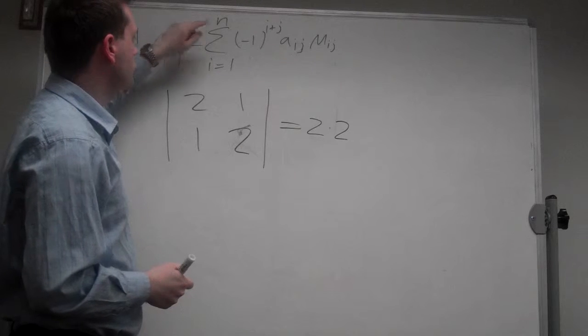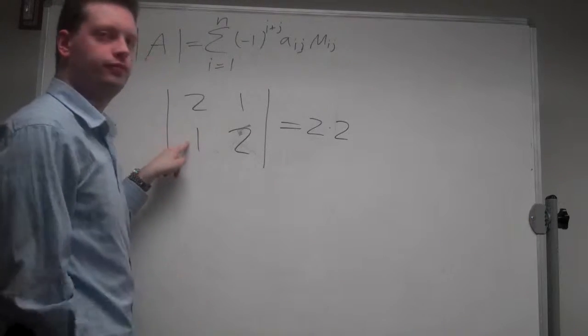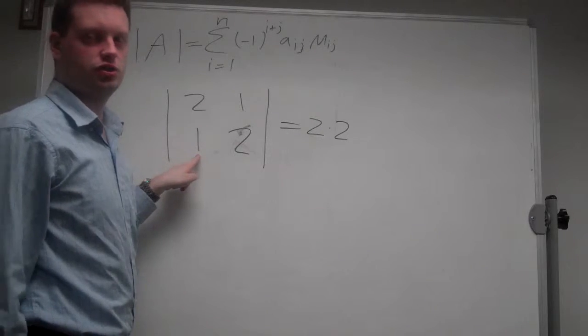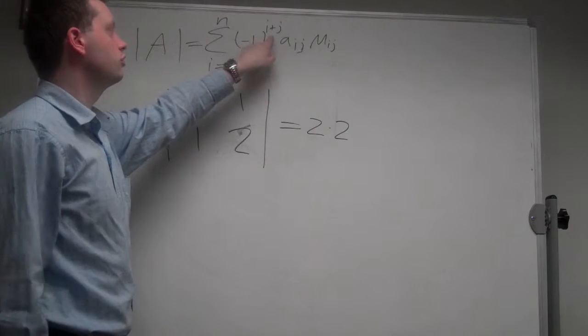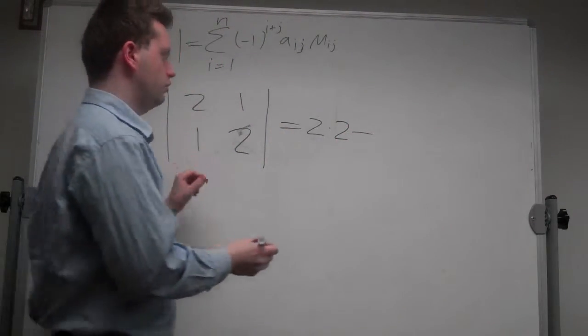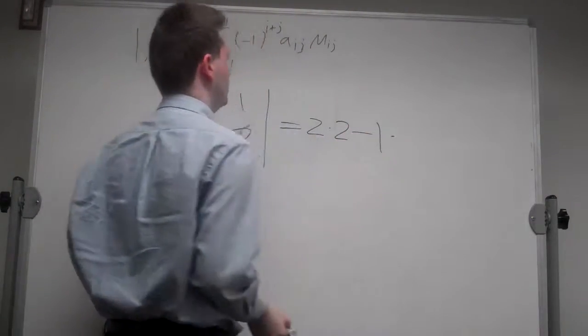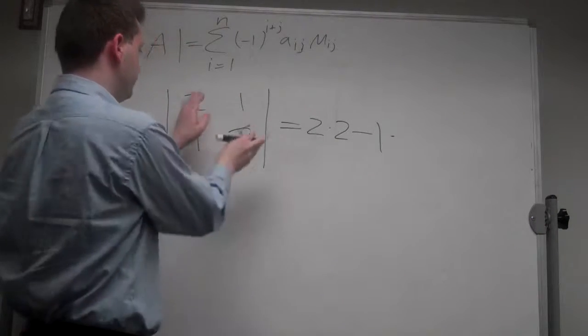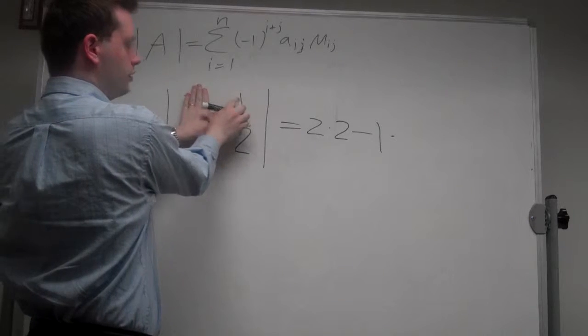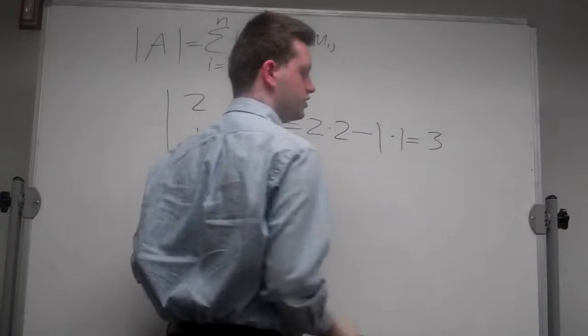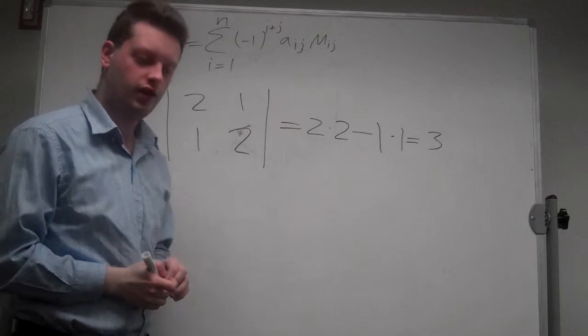Now the second one, we increase the row to number 2. We go to this element, which has indices 2 and 1, so they sum to 3, giving us a minus sign. It's minus 1 times the determinant of the matrix if we delete that row and column. We're left with this element up here, and we calculate the same determinant, which equals 3.